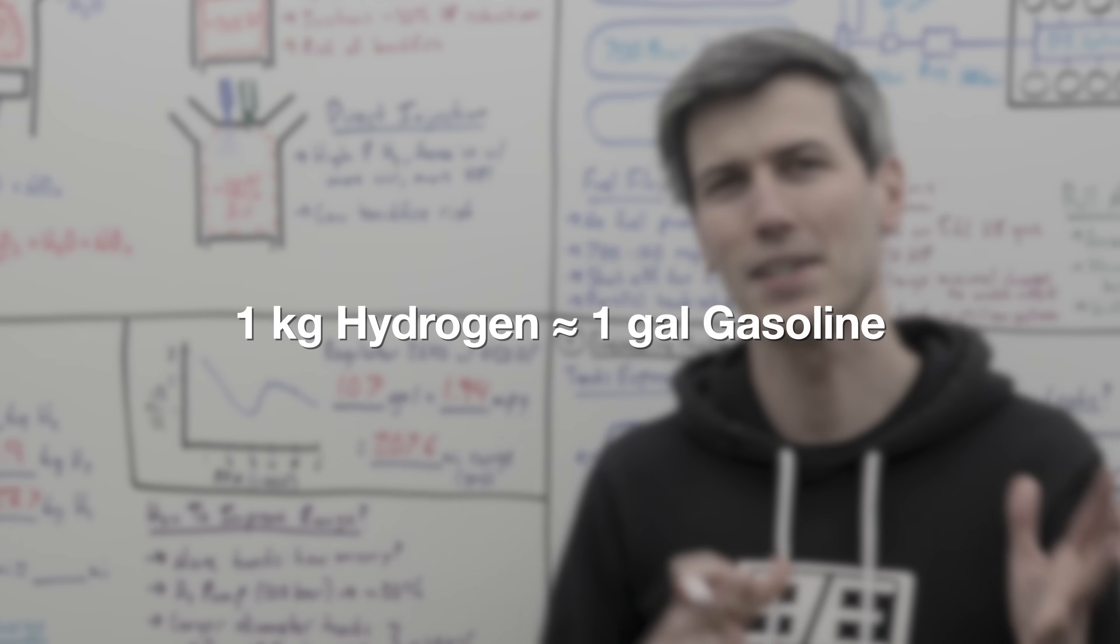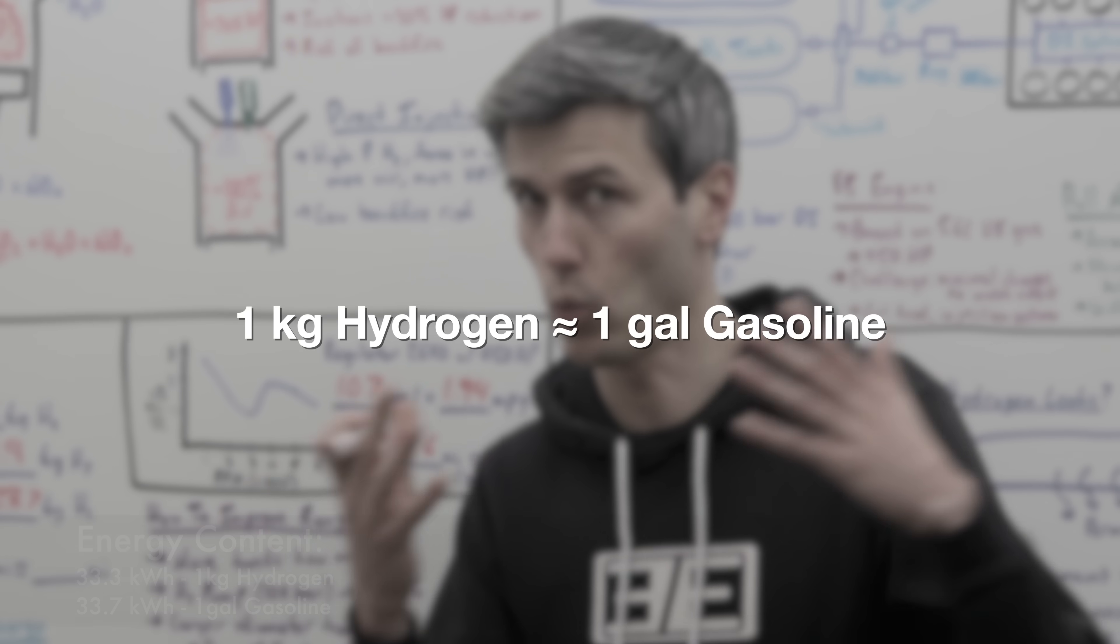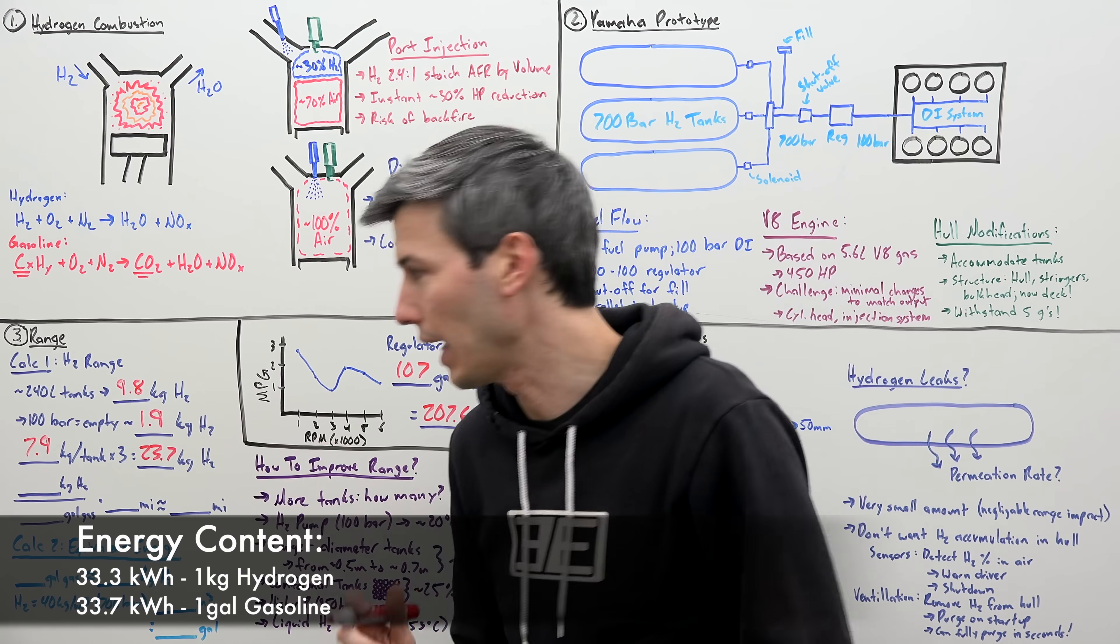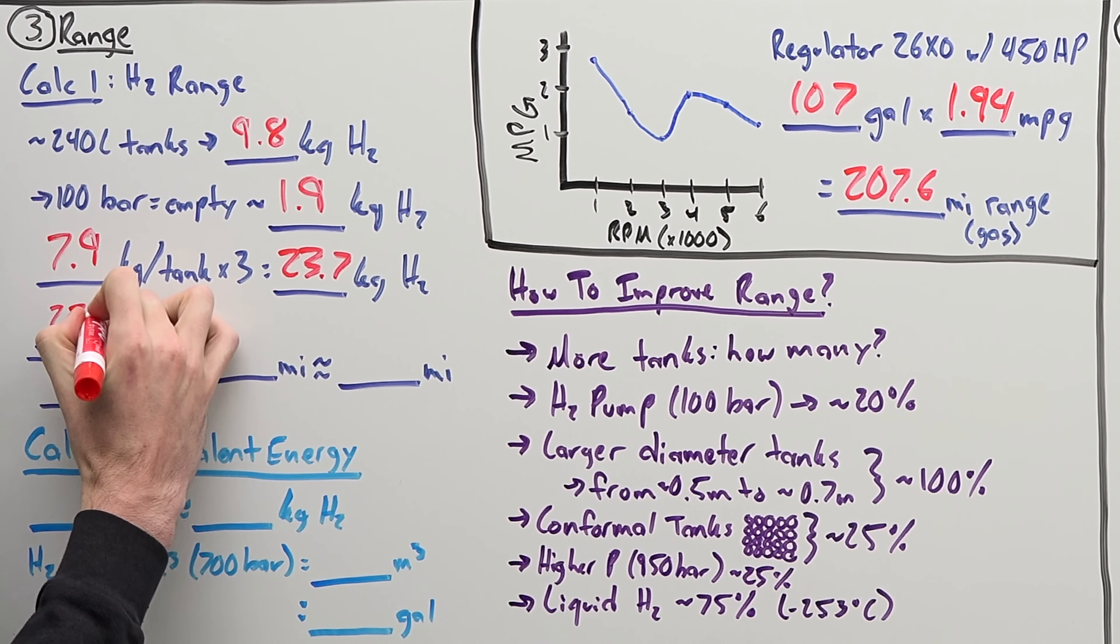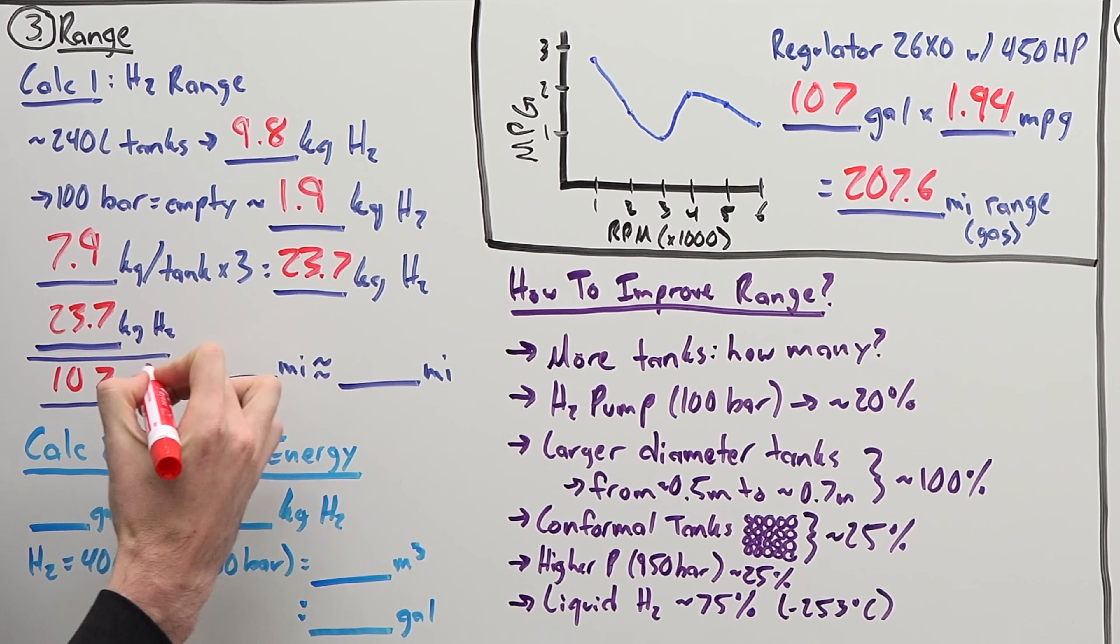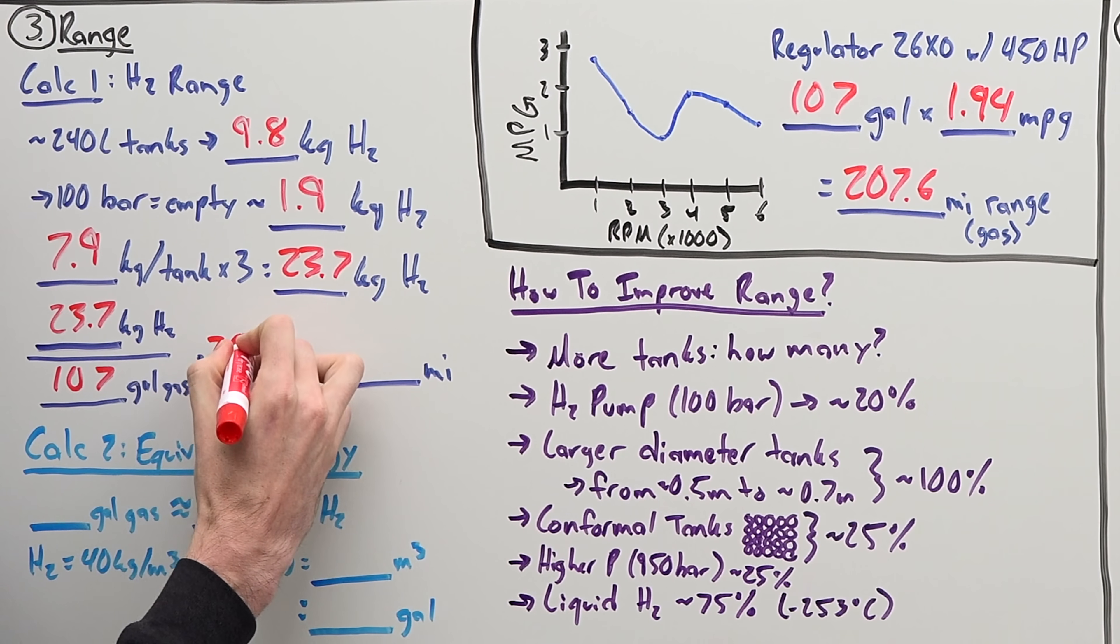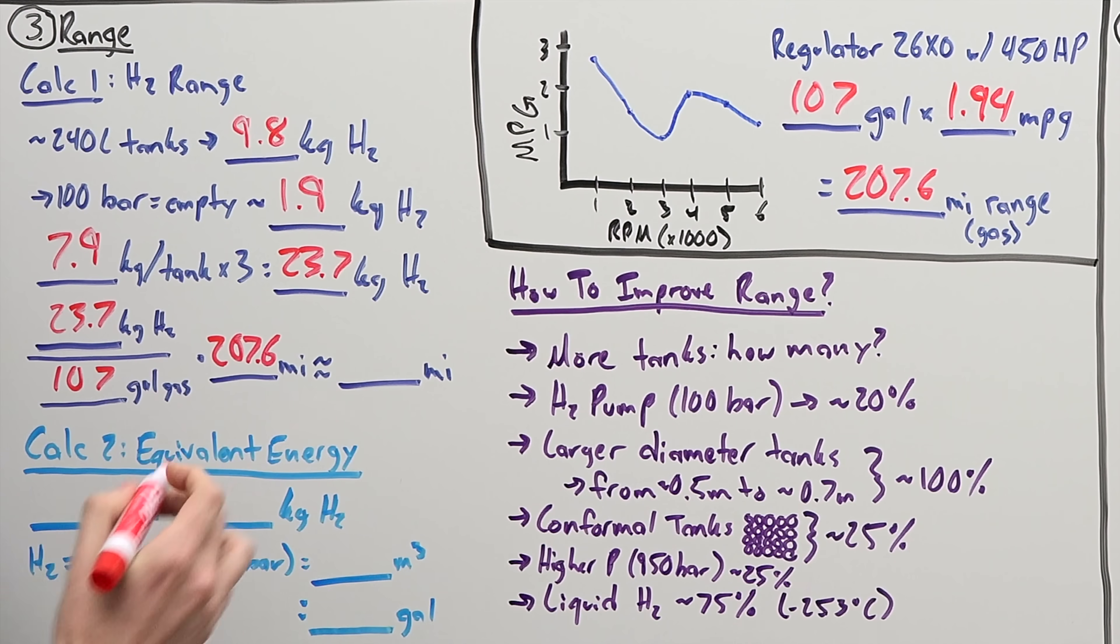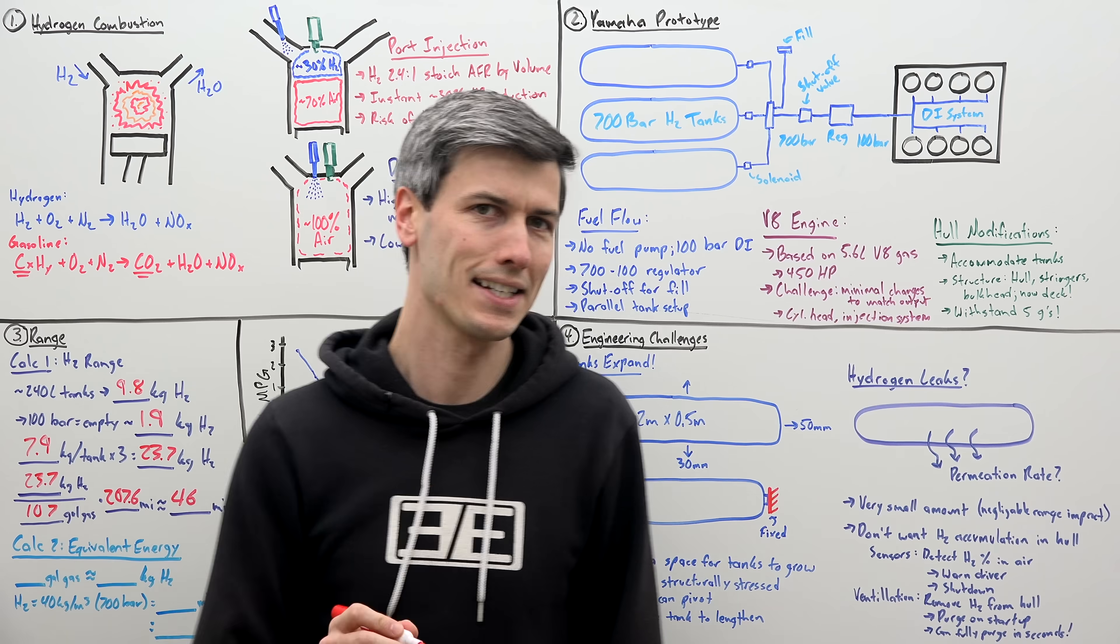Now, hydrogen has about the same energy equivalency as a gallon of gas. One kilogram of hydrogen is about equivalent to one gallon of gas. So, if we take 23.7 kilograms of hydrogen and we divide that by 107 gallons of gas and we multiply that by our total range of 207.6 miles that gives us a hydrogen fuel range of 46 miles.